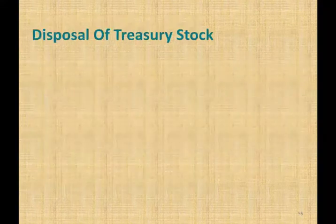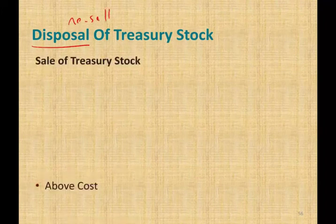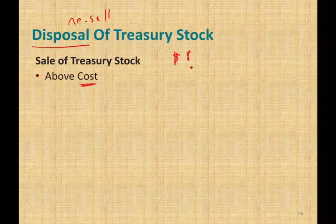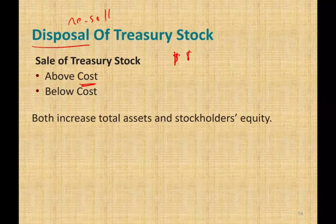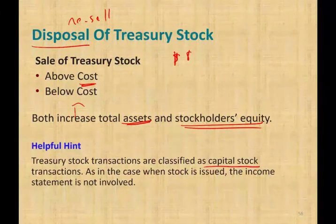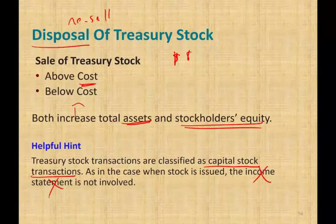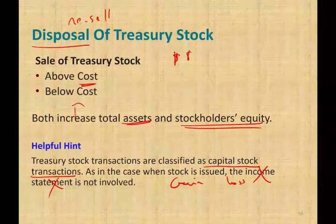Now, disposal of treasury stock. We can resell the treasury stock — sometimes above cost (in our example, above $8) or below cost (below $8). Both increase total assets and total equity. When we sell treasury stock, cash increases and equity increases because we're issuing the stocks. Very important: treasury transactions are classified as capital stock transactions. Just as when stock is originally issued, the income statement is not involved — we do not book a gain or a loss. Treasury stock only affects the equity section of the balance sheet.